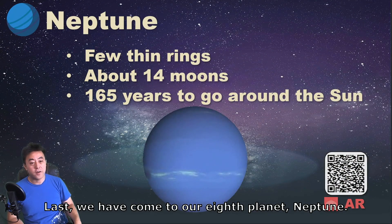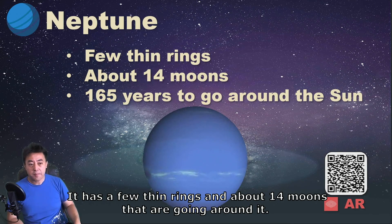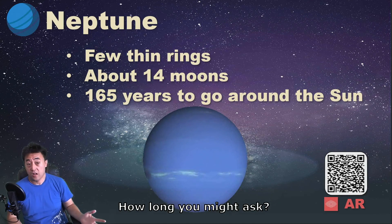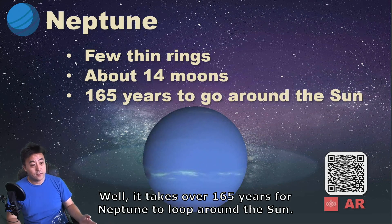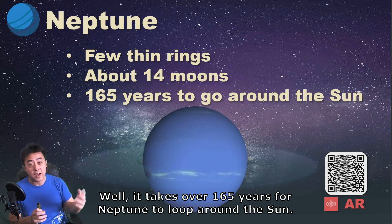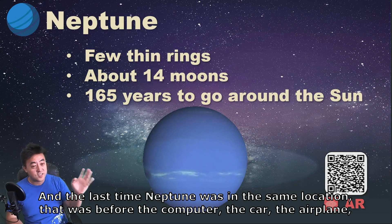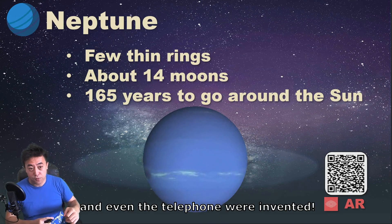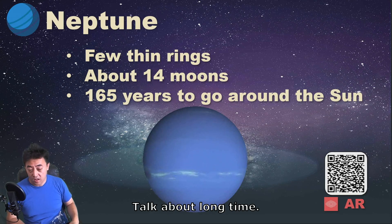Last, we have come to our eighth planet: Neptune. It has a few thin rings and about 14 moons that go around it. Since Neptune is so far away from the sun, it takes a very long time to go around — over 165 years for Neptune to loop around the sun. The last time Neptune was in the same location, that was before computers, cars, airplanes, and even telephones were invented. Talk about a long time!